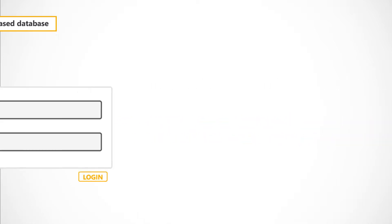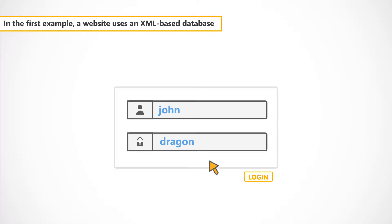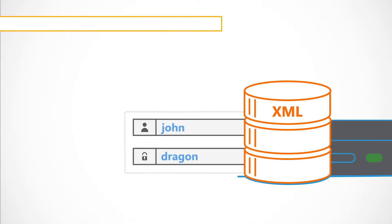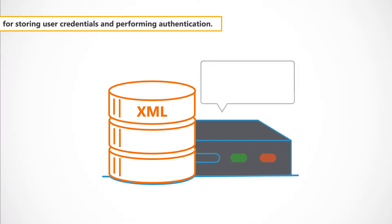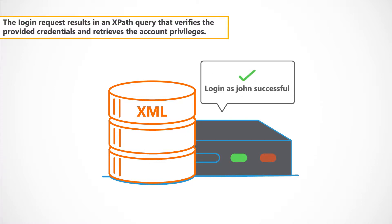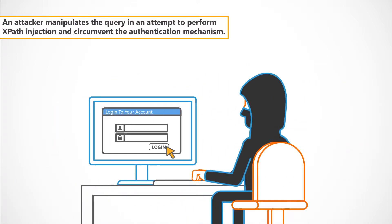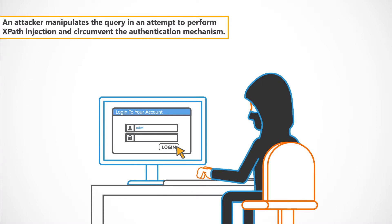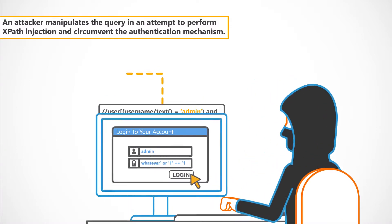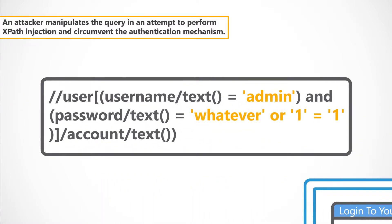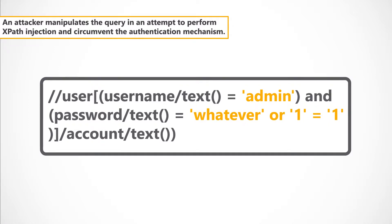In the first example, a website uses an XML-based database for storing user credentials and performing authentication. The login request results in an XPath query that verifies the provided credentials and retrieves the account privileges. An attacker manipulates the query in an attempt to perform XPath Injection and circumvent the authentication mechanism.